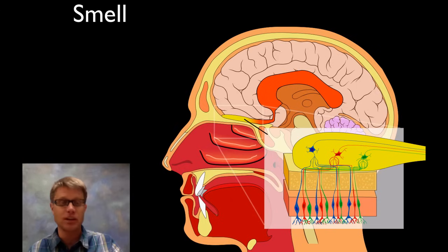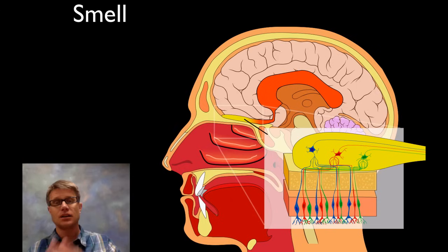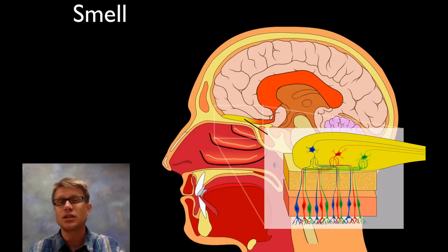So today what am I going to talk about? Well I just want to talk about three of those. I'm going to start with smell. Smell is not super important in us, but it is important. But just as an example for the next two which are going to be vision and then hearing.